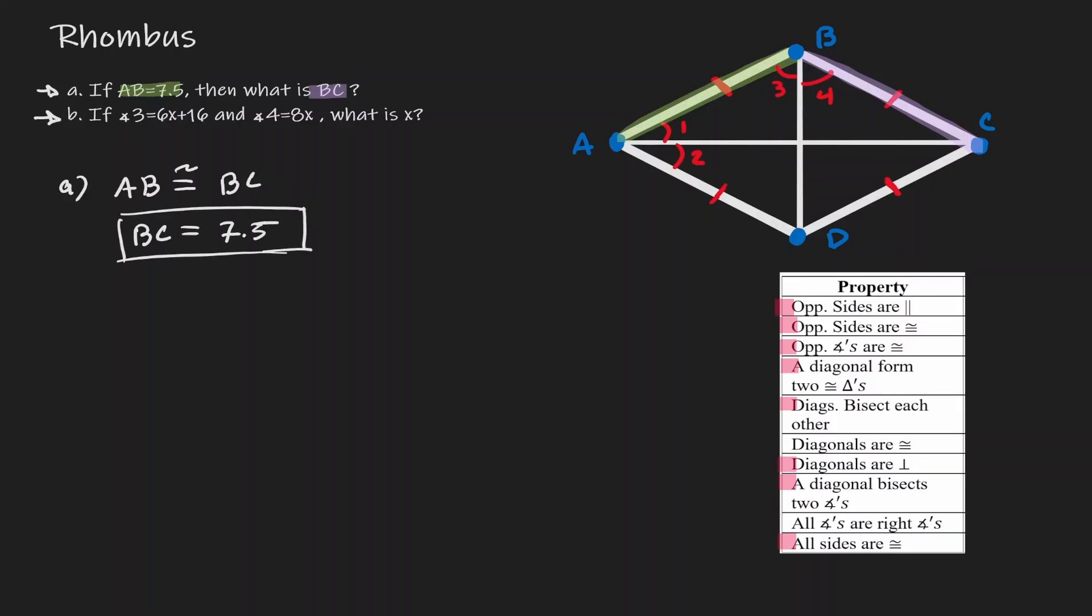Now let's think about how we can solve the following task. Here we are given that angle 3 has an expression of 6x plus 16, which you can find it here. And what we want to find information of is angle 4, which you can find it here.